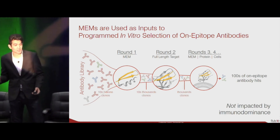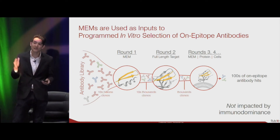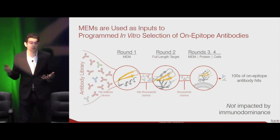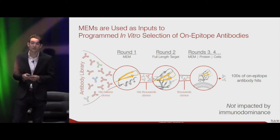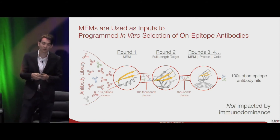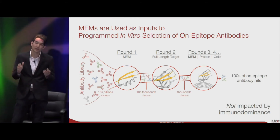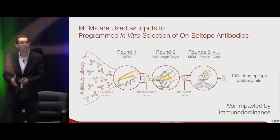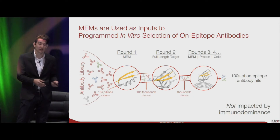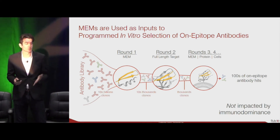Then we add a layer of stringency in round two with a full-length target, where we find the thousands of clones that bind specifically to our full-length target. We can add further layers of stringency in subsequent rounds — here showing cells expressing our full-length target — to find roughly hundreds of on-epitope antibody hits. Critically, we've avoided the immunodominance problem right up front at round one by not allowing any clones through that would have bound to the immunodominant sites on the full-length target, thanks to our MEM filter.